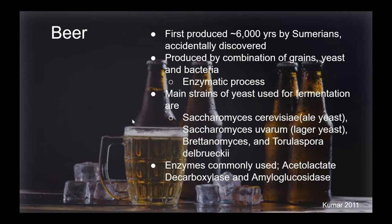The first process we will be looking at is the production of beer. Records show that the brewing of beer started about 6,000 years ago by Sumerians. It is believed they accidentally discovered the beer-making process when grains would get wet and left out for days. Today, there is a more scientific approach to beer-making. It is a process combining grains, yeast, and bacteria, known as an enzymatic process.